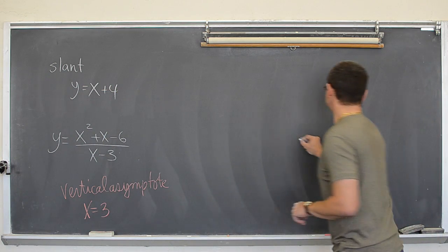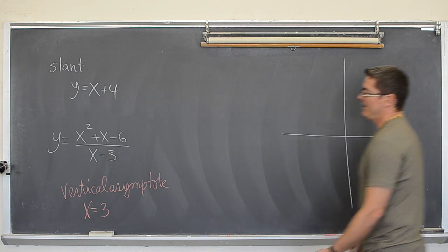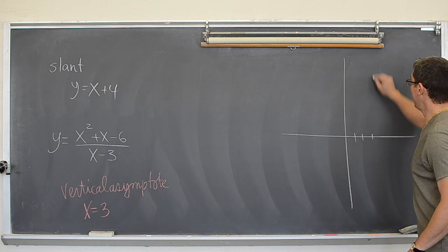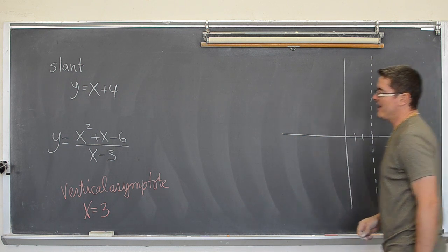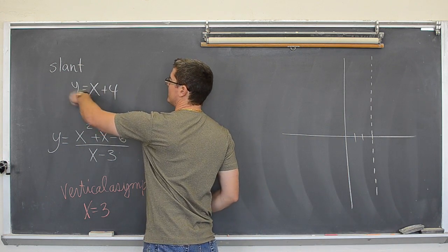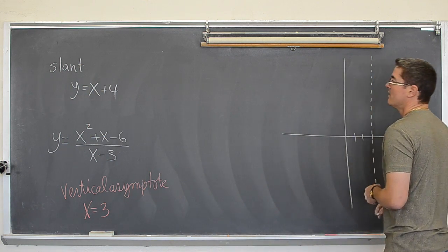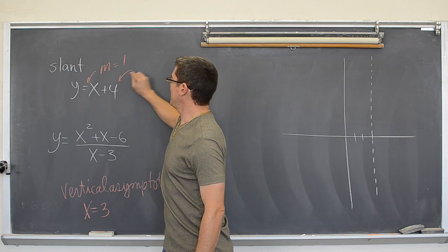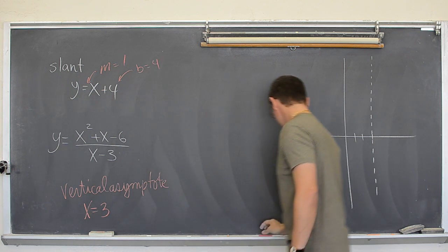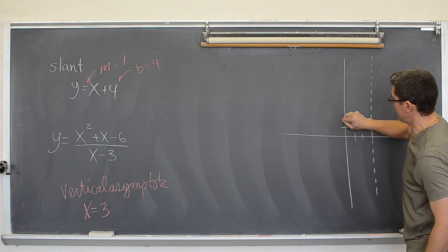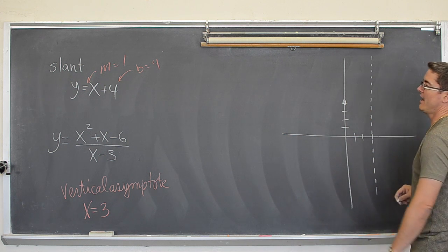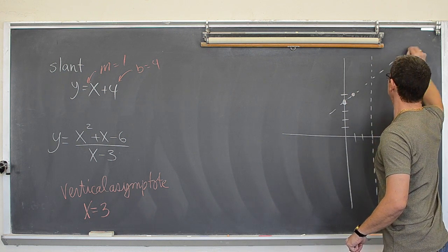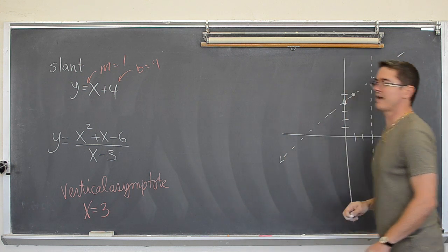So, I just erased my slant asymptote. It was y equals x plus 4. We have got a rational function that is undefined at 3 and therefore will have a vertical asymptote at 3. We have a rational function that has a slant asymptote of y equals x plus 4. So, this has got a slope of 1 and a y intercept of 4.